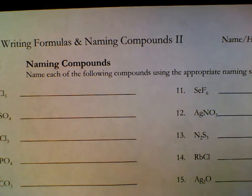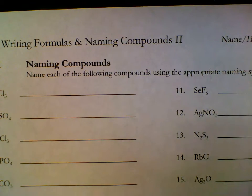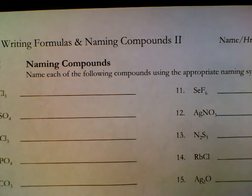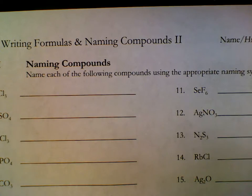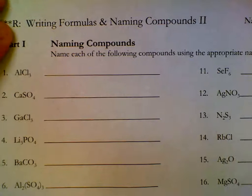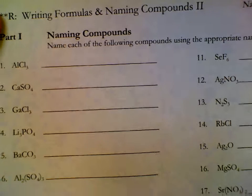This is the answer key for writing formulas and naming compounds number two. This is one of the largest assignments we have for this unit, so I'm going to go much faster through this. We have to classify each name or formula as being ionic or covalent. Covalent will be a nonmetal stuck to a nonmetal.